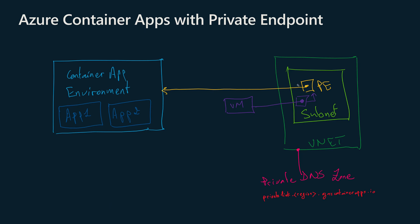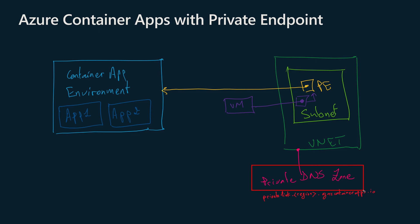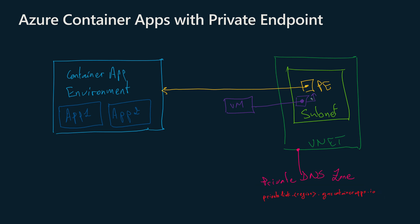In this demonstration, we'll create a private endpoint for an Azure Container Apps environment so that the applications within the environment can be accessible only through the private endpoint. We'll disable the public access for the Azure Container Apps environment, enable the creation of a private DNS zone that will resolve the private link FQDN, and then test the connectivity to the container apps through the private endpoint with an Azure virtual machine hosted within the same VNet.